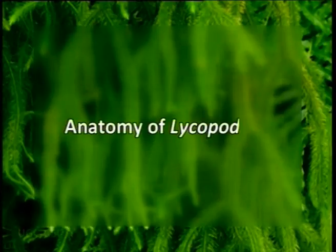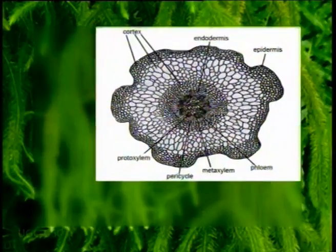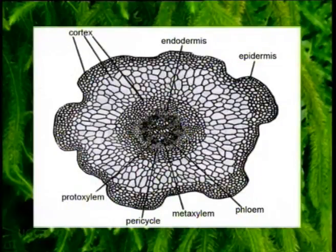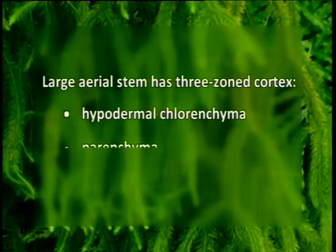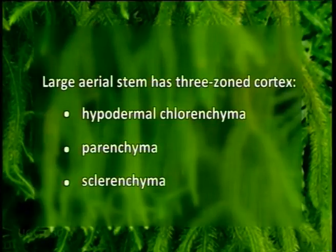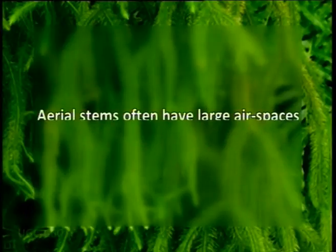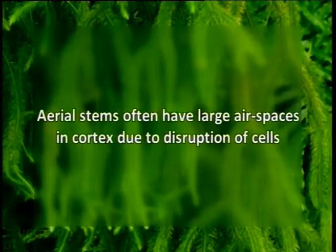We will now discuss the anatomy of Lycopodium. Histologically, the stem has a one-celled epidermis with stomata, a cortex, and a central vascular cylinder. The cortex in some species remains parenchymatous, and in others with age, the cortex gets sclerified into outer and inner zones, forming three bands, and in extreme cases, the entire cortex gets sclerified. Long aerial stems normally have a three-zoned cortex: hypodermal chlorenchyma, followed by parenchyma, and sclerenchyma encircling the stele. Aerial stems often have large air spaces in the cortex due to disruption of cells.